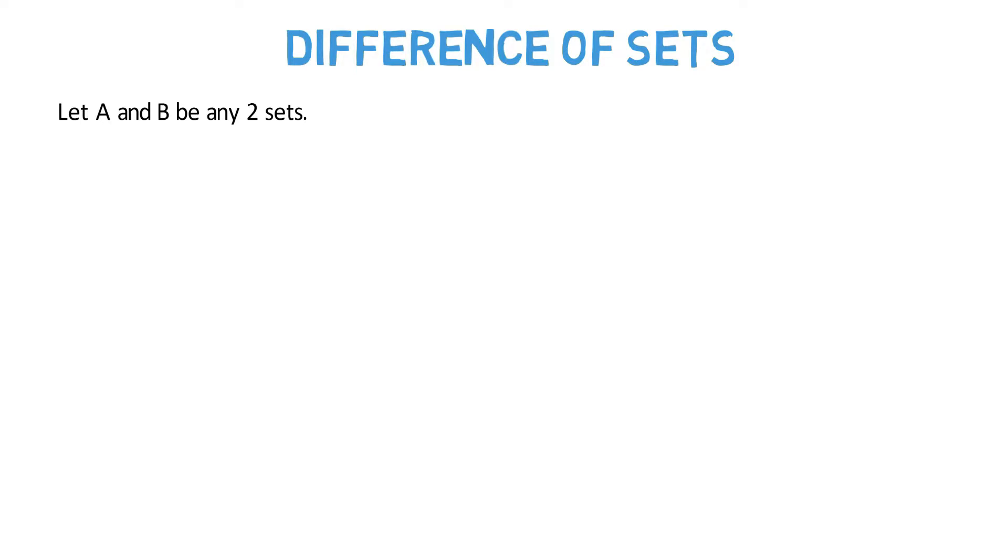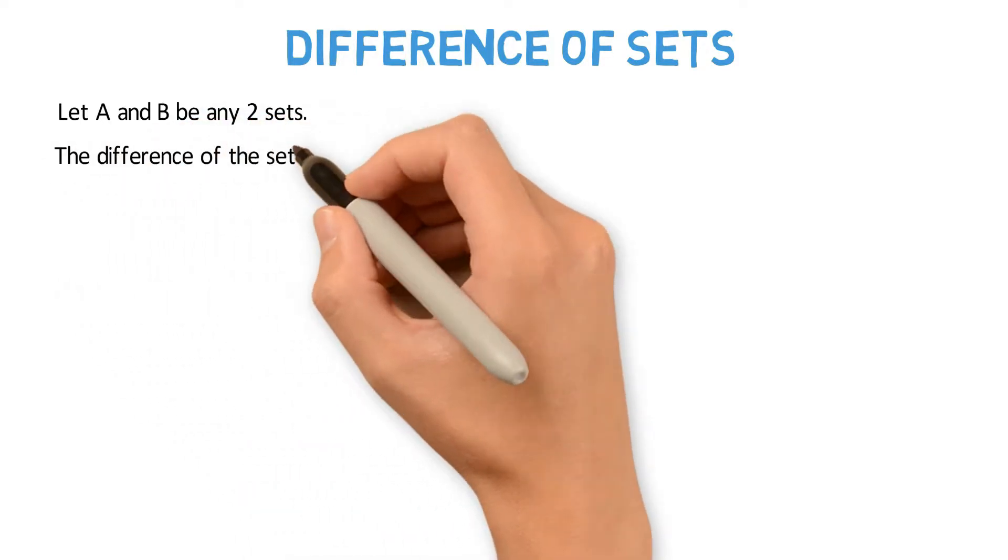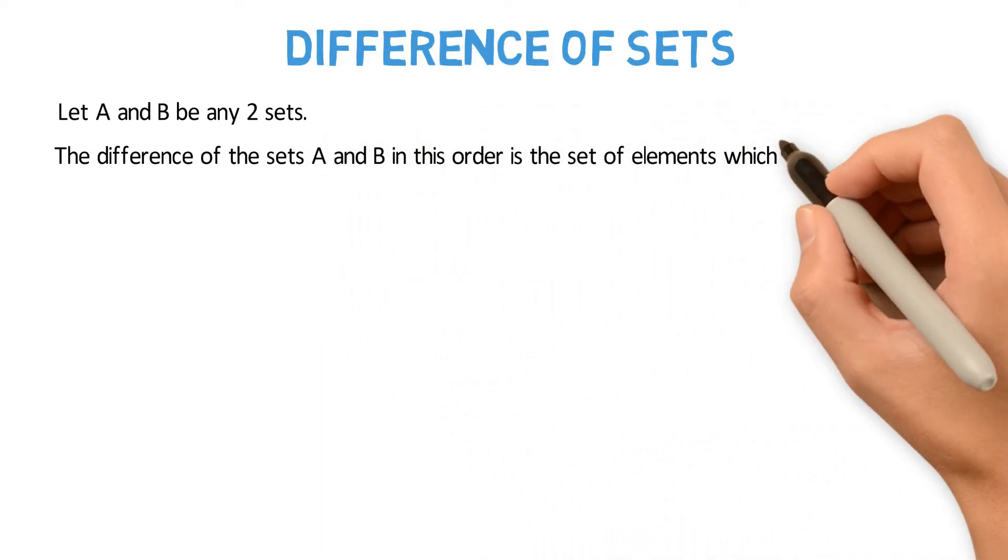Let A and B be any two sets. The difference of the sets A and B in this order is the set of elements which belong to A but not to B.